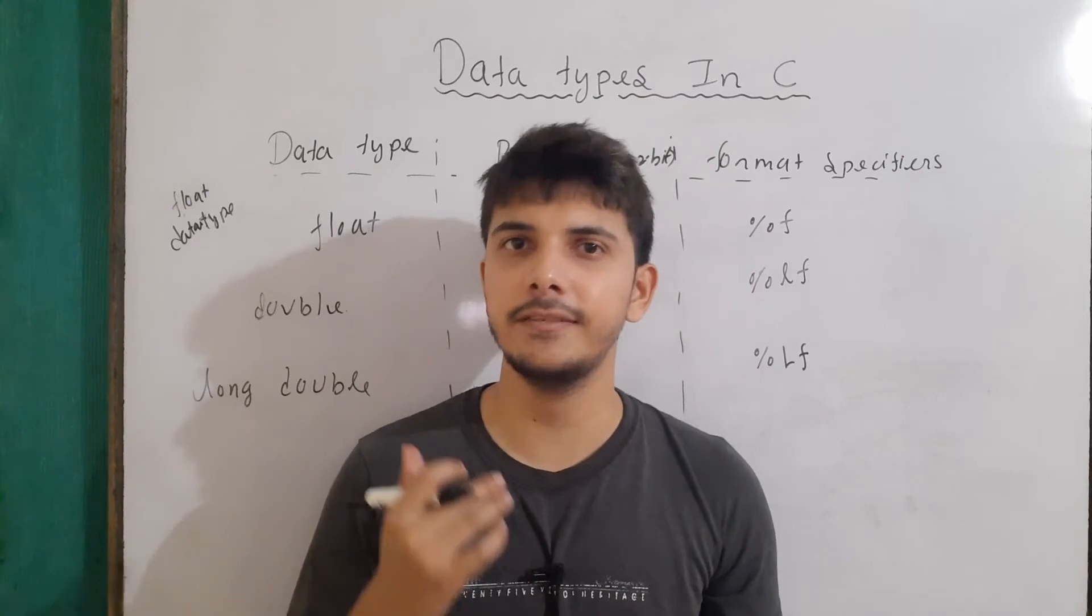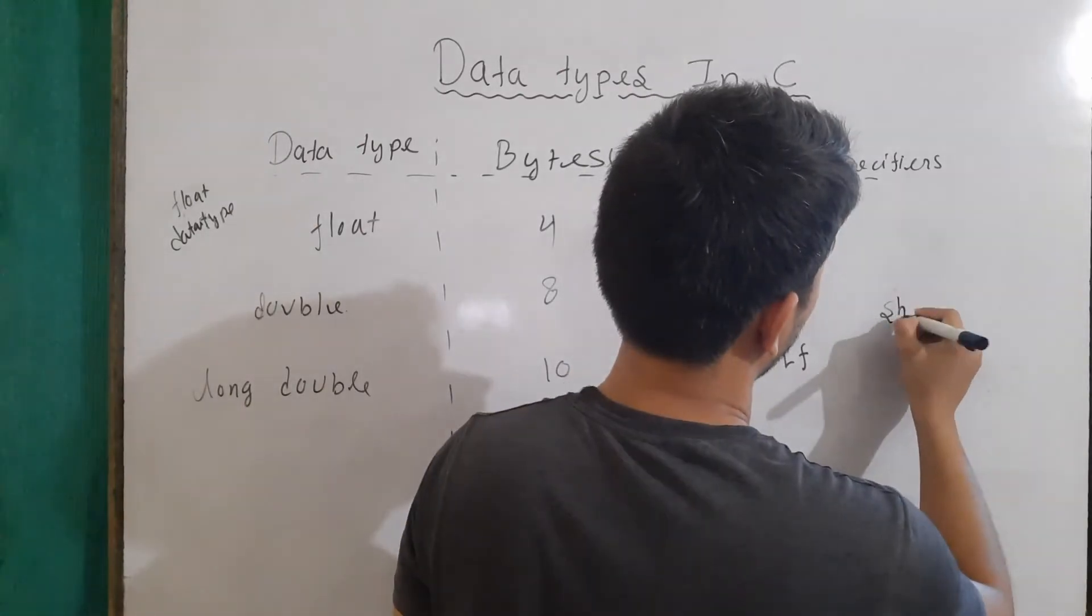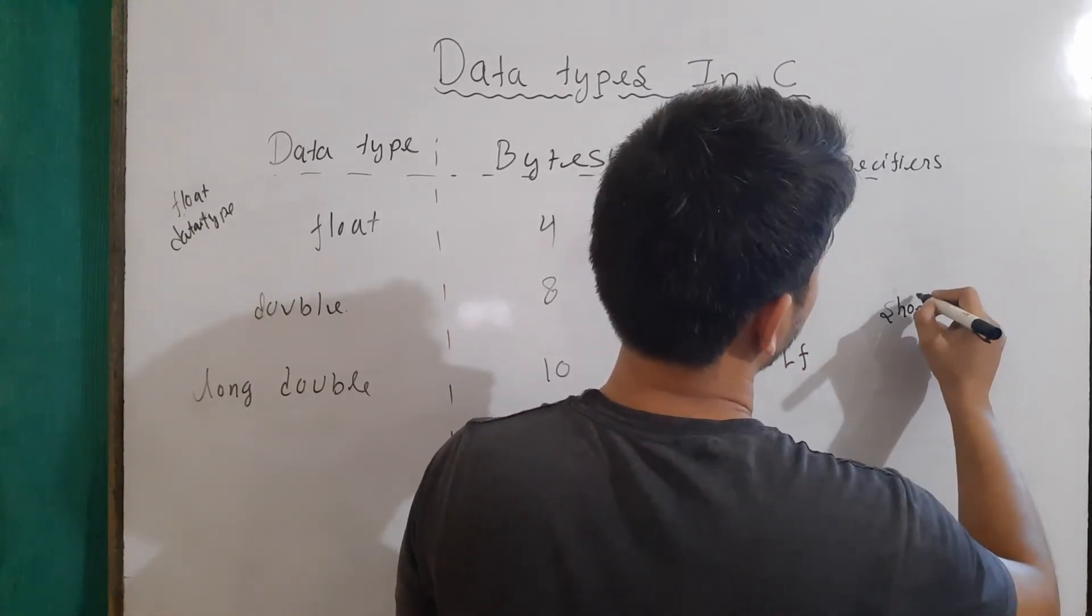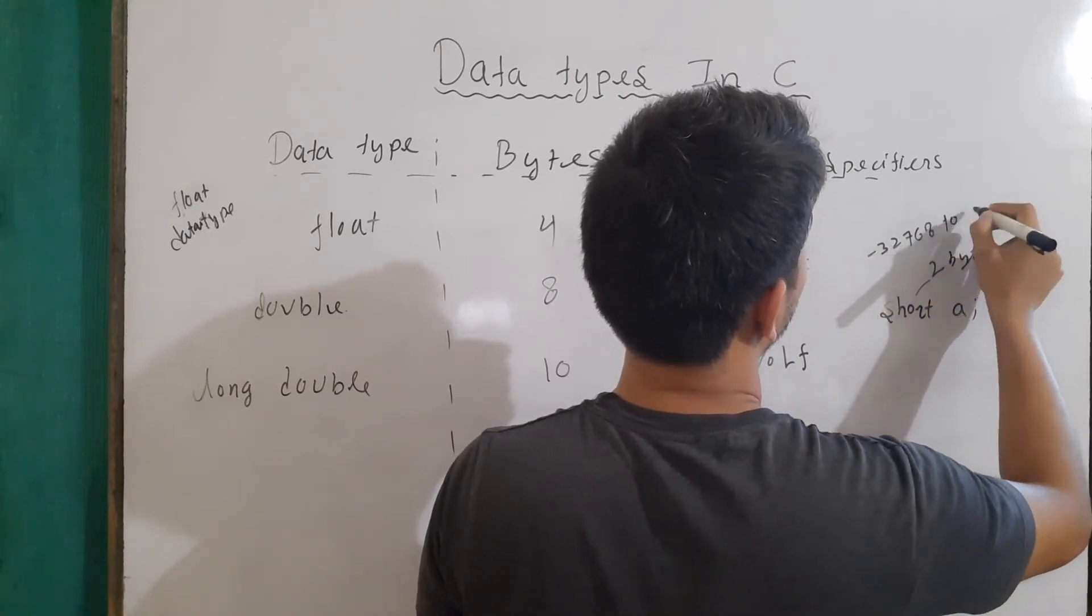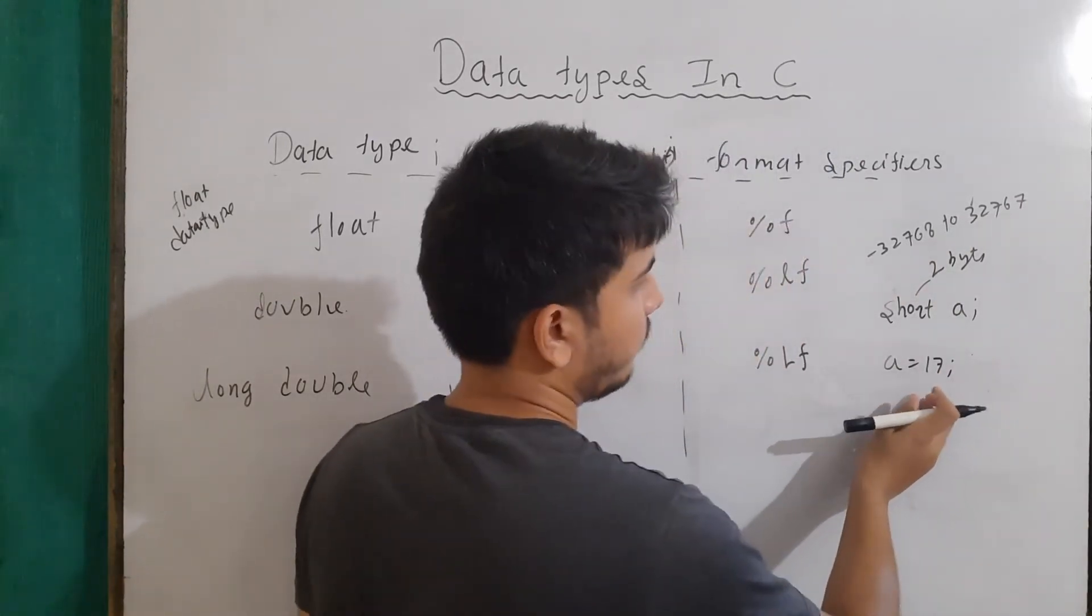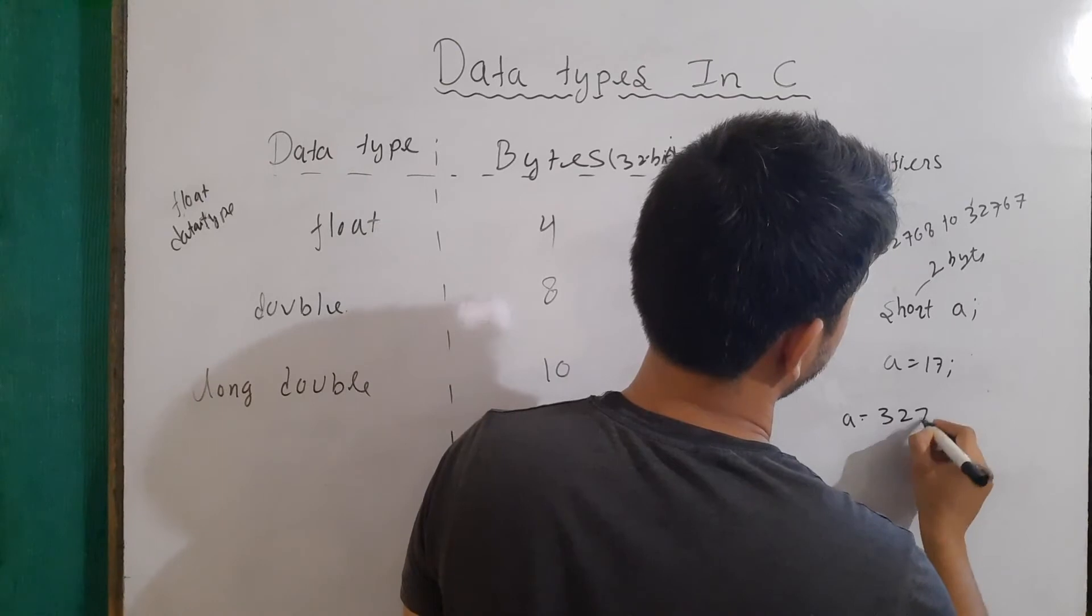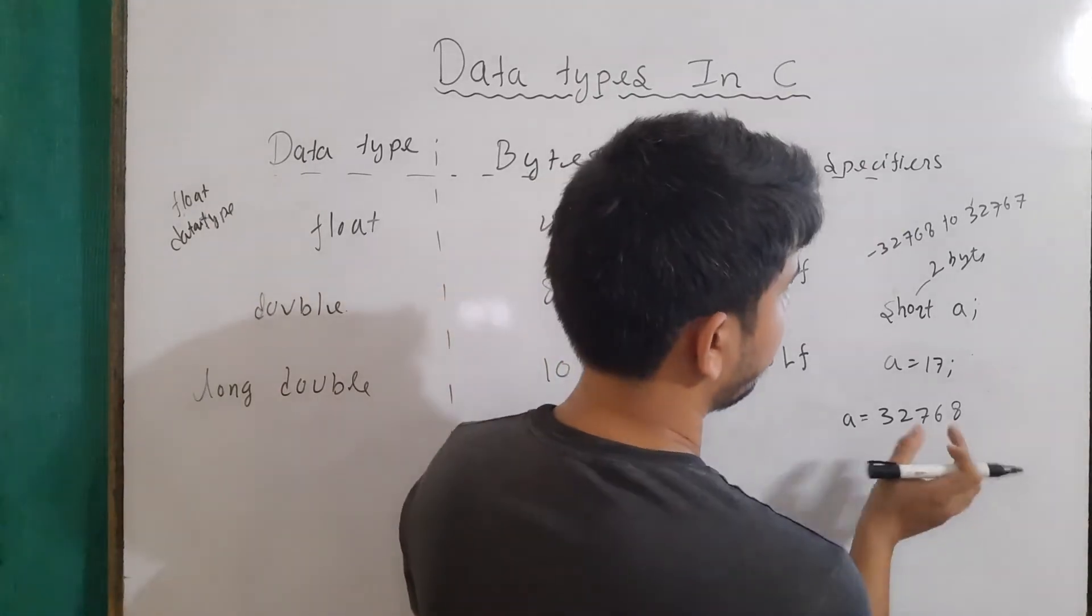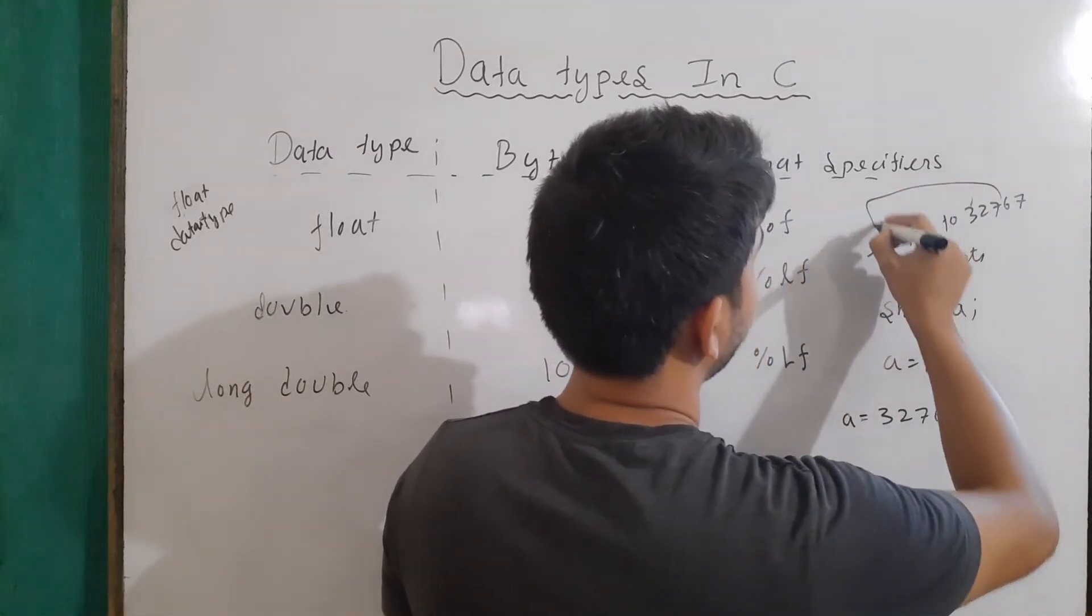Now, one question is that what happens when we increase the range of a variable or cross the range? For example, let's say I'm writing here short and then variable name is a. The number of bytes for it will be 2 bytes and range will be minus 32768 to 32767. Now, if I write here a equals to 17, this will be perfectly fine because this number is within its range. But let's say I'm writing here 32768. The question arises here is that what will happen if I'm crossing the range? For example, in this case, I'm writing a equals to 32768. Now, in this case, what will happen?